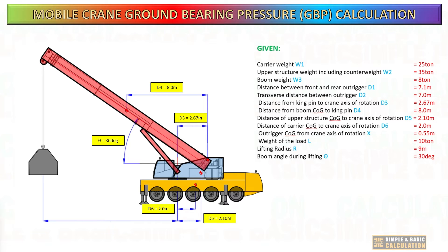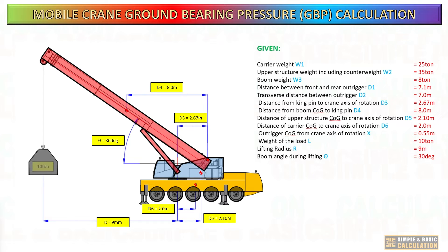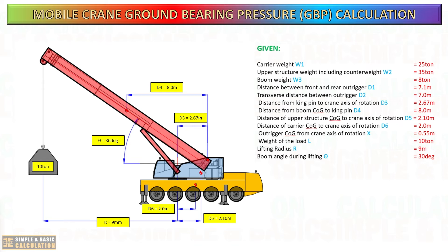Now let us plot these given measurements in our drawing for easy understanding. All these measurements are what we need for our calculation of ground bearing pressure in each outrigger. Changes in these values will affect the loading in each outrigger.